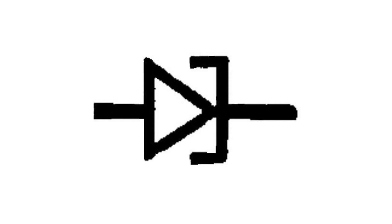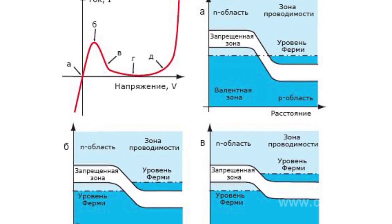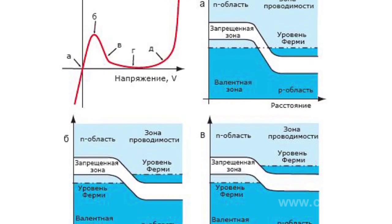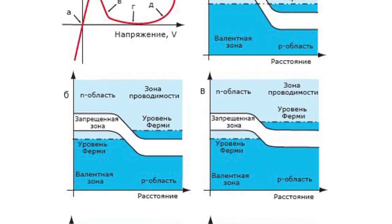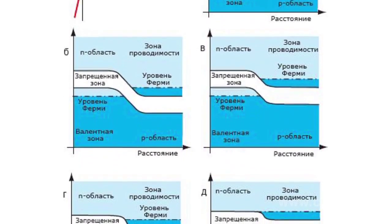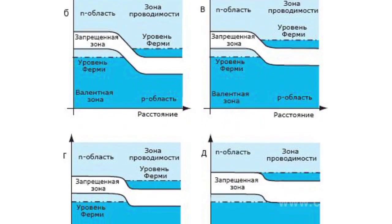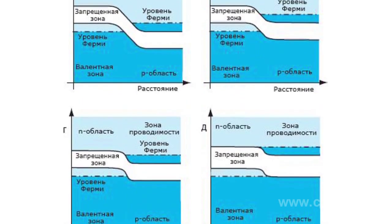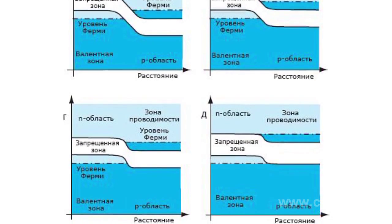You can see the tunnel diode diagram in the figure. Its volt-ampere characteristic has a segment with negative differential resistance. This is explained by the fact that in the case of a very thin barrier band, the charges from the valence band are tunneled into the conducting band.